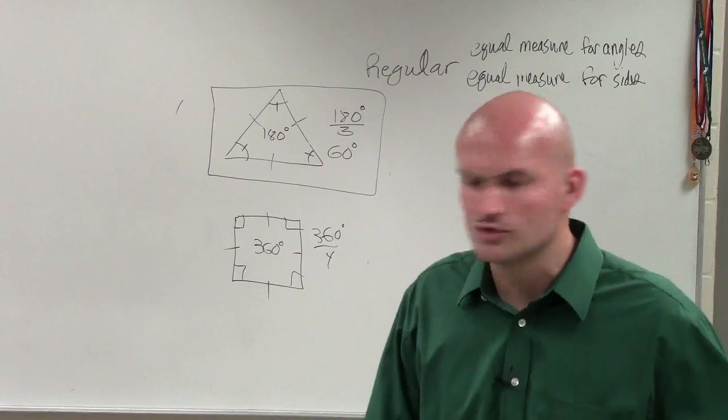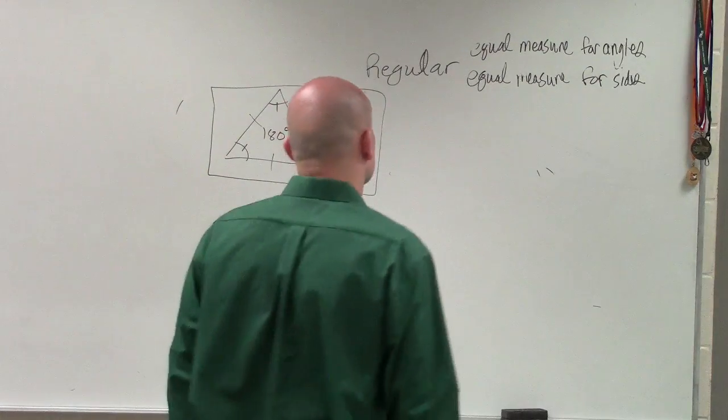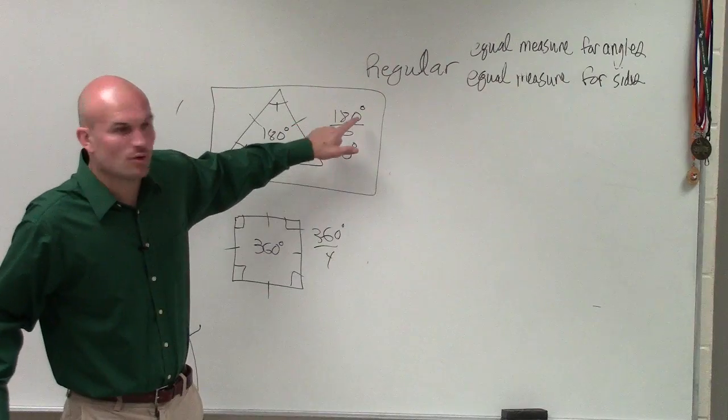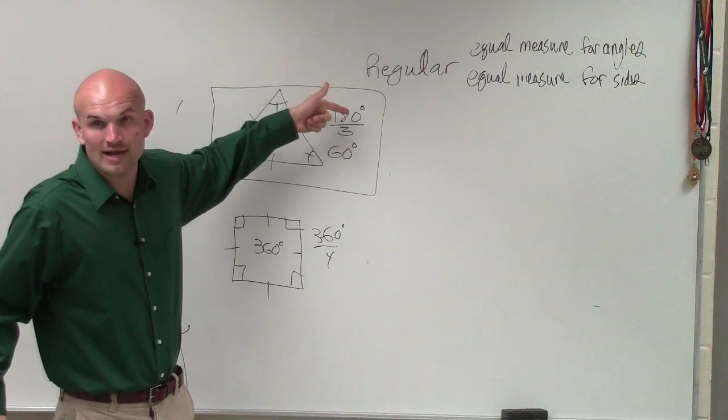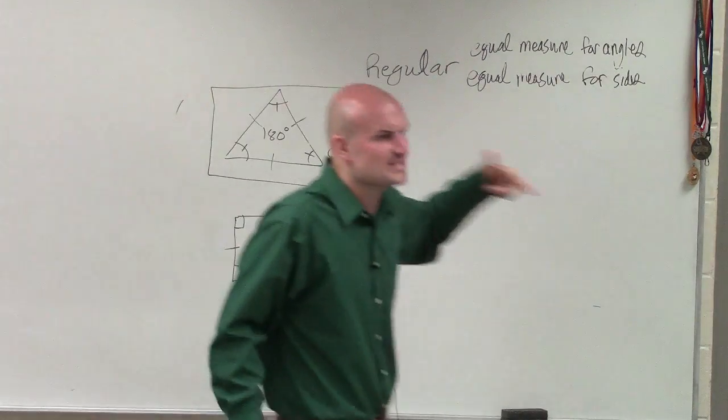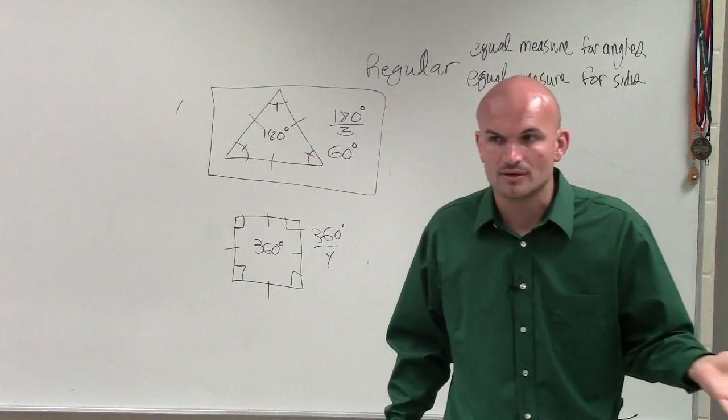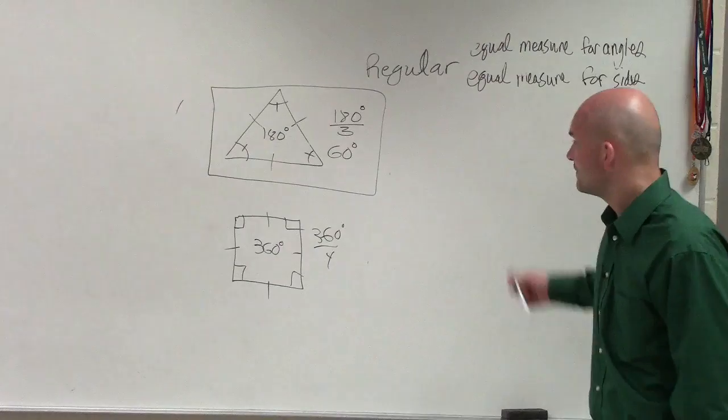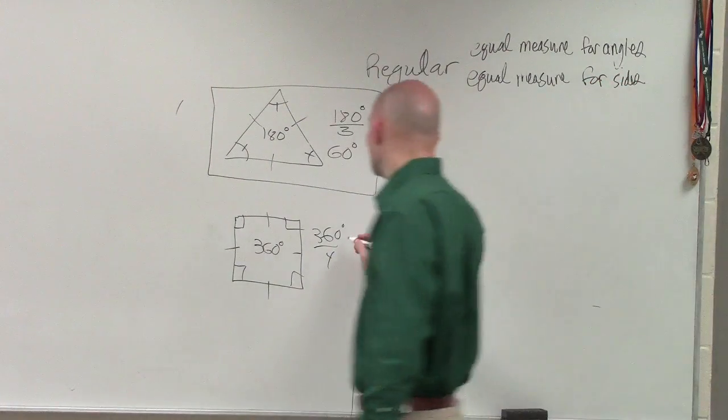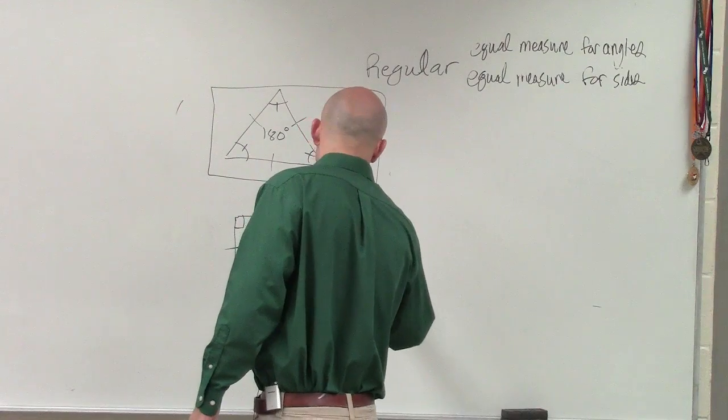How are we going to use this? What I want you to notice, I take 180 or the sum, what I'm doing is I'm taking the sum and I'm dividing it by three. Three represents what? What is three the number of? How many sides I have. What about four? What is four the representation of? Sides. And that gives me what each individual angle is.